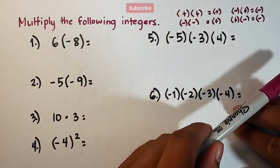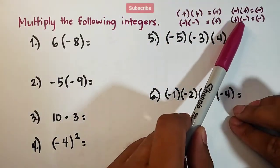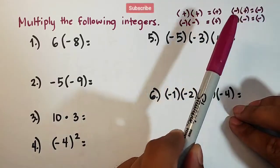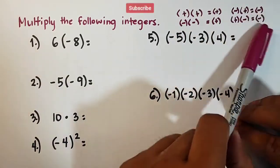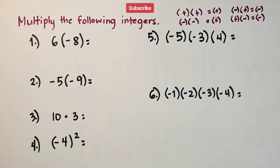And if you will multiply integers with different signs, like this one, negative positive, positive negative, it will give you the product of negative.